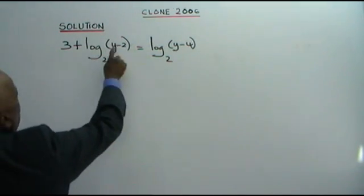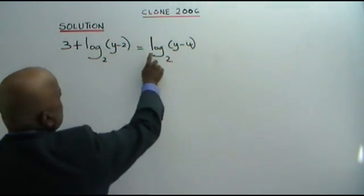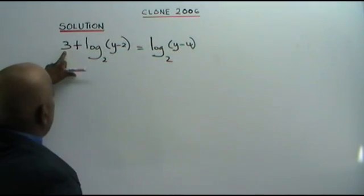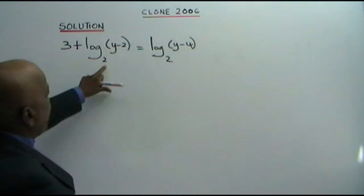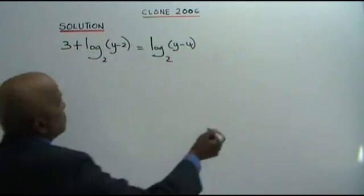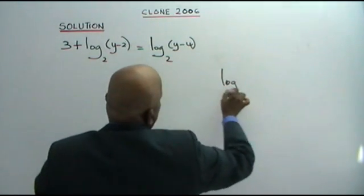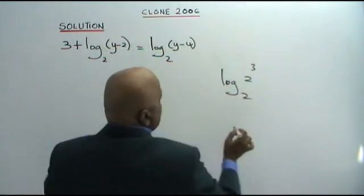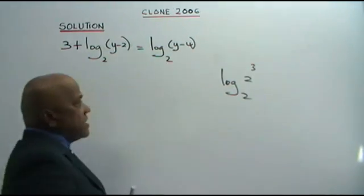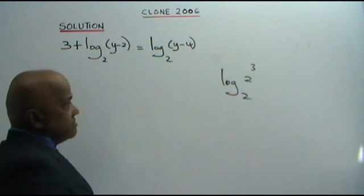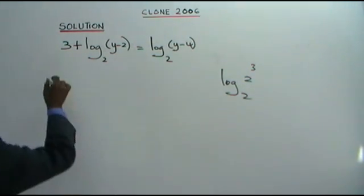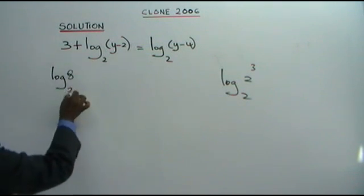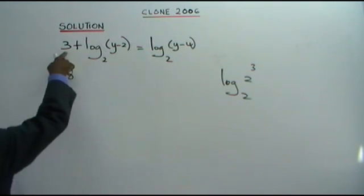3 plus log(Y minus 2), base 2, equals log(Y minus 4), base 2. Now we convert the 3 into a log. Since log 2, base 2 is 1, we raise to the power of 3. Two to the power of 3 is 8. So log 8, base 2 equals 3.